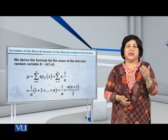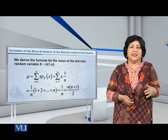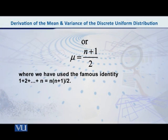So obviously n will cancel with n and we are left with mu is equal to n plus 1 over 2. We have derived the mathematical expression of the mean of the discrete uniform distribution that we denote by U and then a bracket in which we write 1, n.